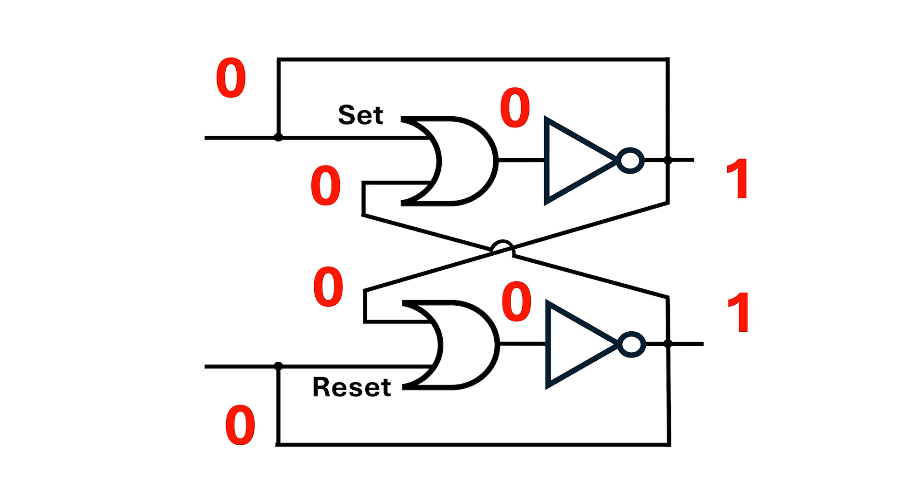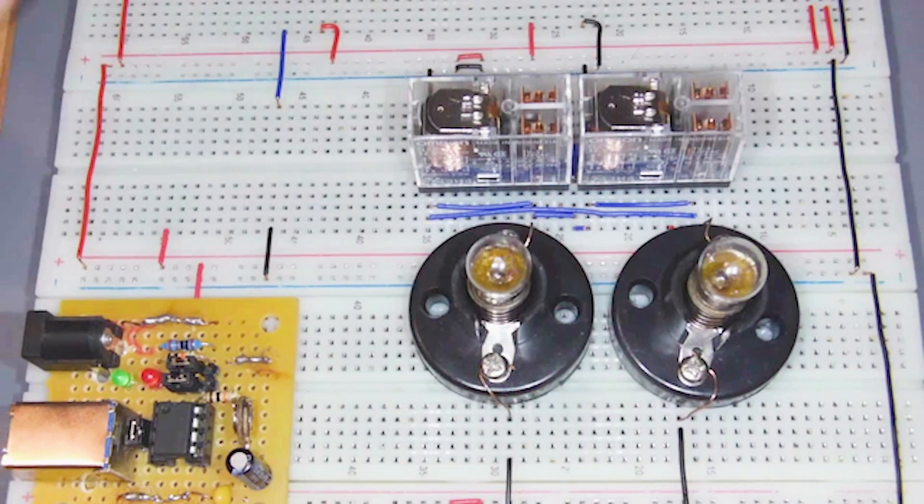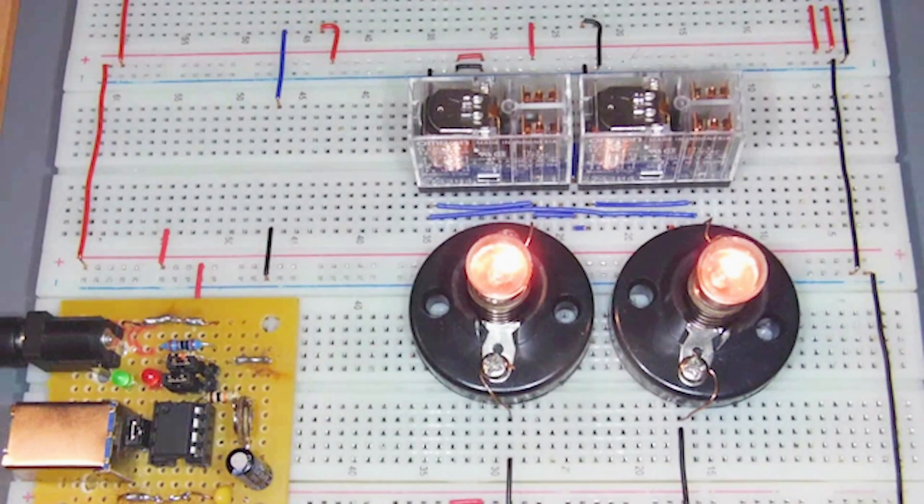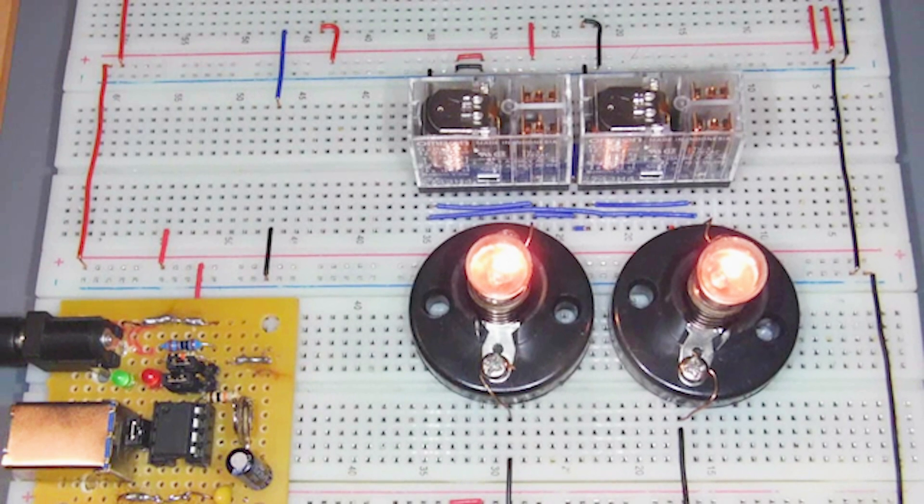So, once again, we're in a race condition where the outputs will oscillate. I've built this circuit from relays, and we can see that it oscillates. I'll end this video here, but I want you to think about a way we might solve this before you watch the next video.